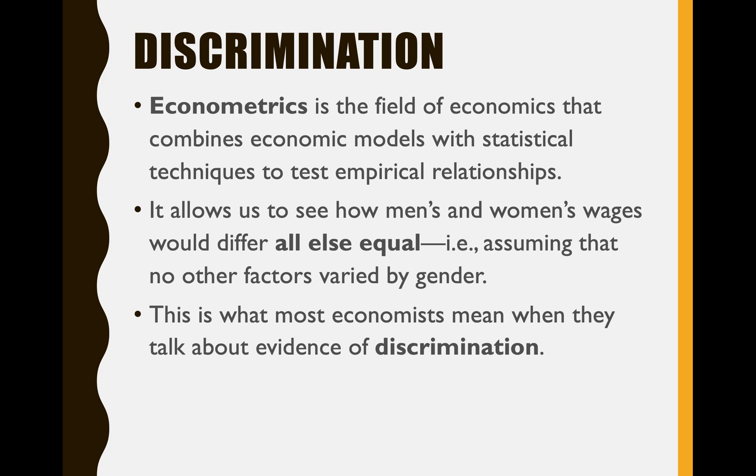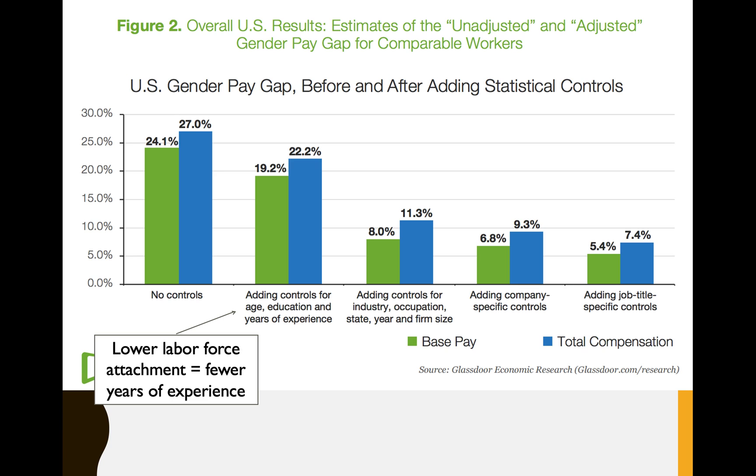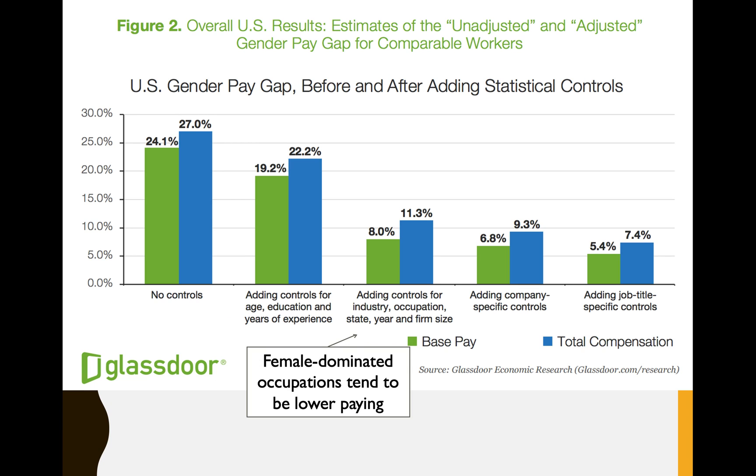This slide we were just looking at is explaining what I had just talked about. We're using econometrics, which is a field of economics that thinks about statistics and statistical models, to help us see how men and women's wages would differ if all else equal — assuming that there are no other factors that varied by gender.